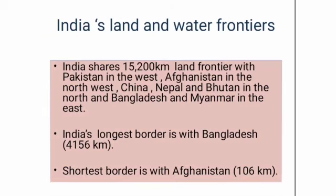India's Land and Water Frontier. India shares its 15,200 km long land frontier with Pakistan in the west, Afghanistan in the north-west, China, Nepal, Bhutan in the north, Bangladesh and Myanmar in the east. India's longest border is with Bangladesh, while the shortest border is with Afghanistan.